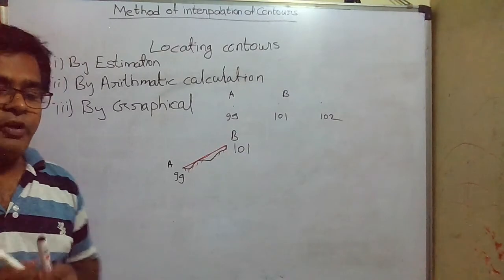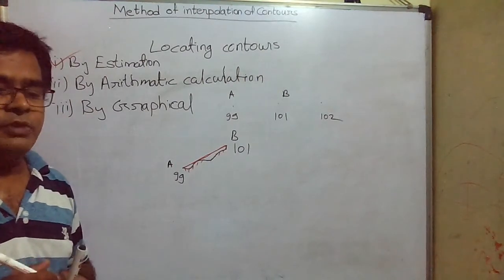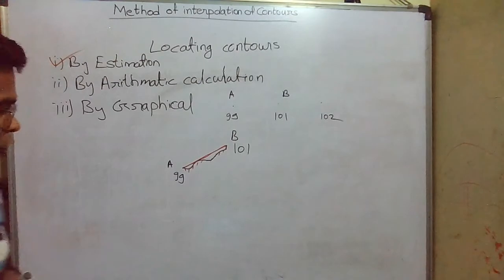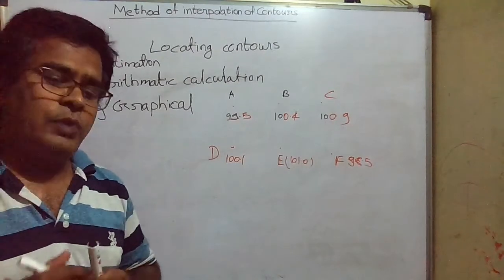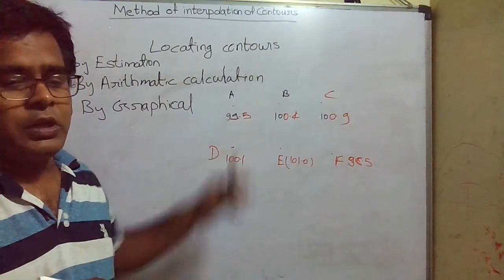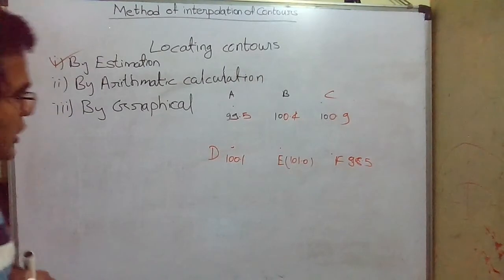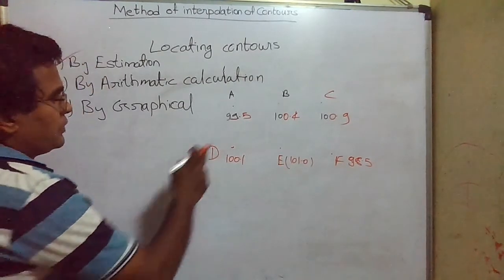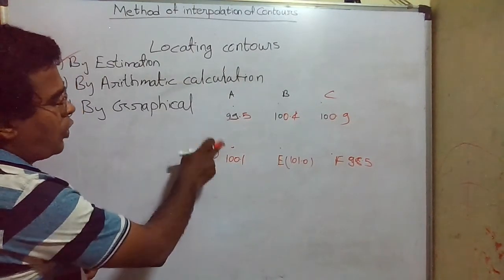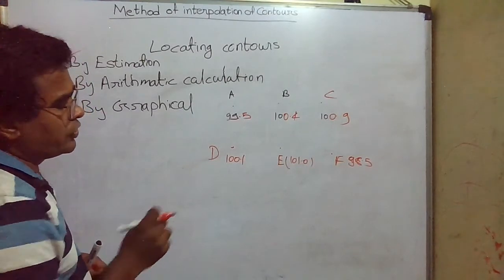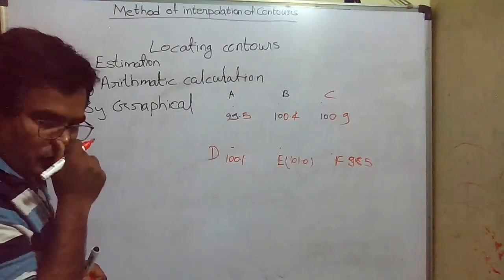The first method is by estimation. How do we locate a contour by the estimation method? Suppose there are random points A, B, C. We will see how to interpolate the desired contour in between these points by estimation. By estimation, suppose this point is 99.5 and this point is 100. Now if I want to find the point of RL 100 in between, how do I interpolate it?